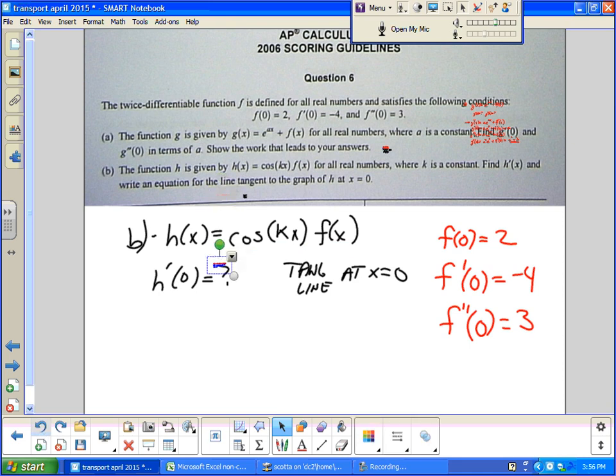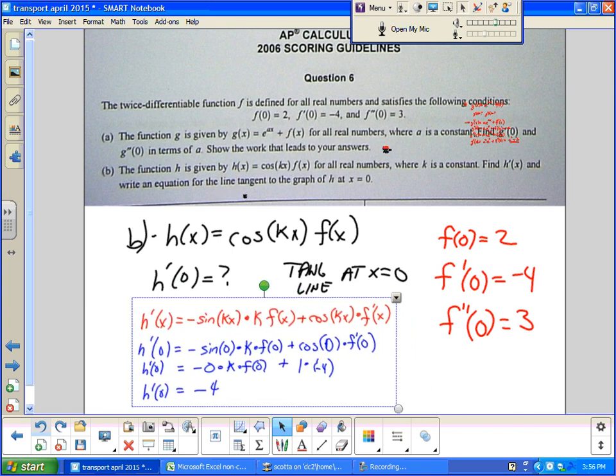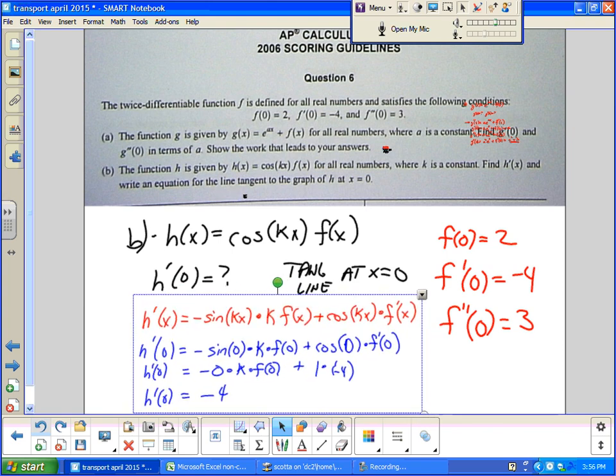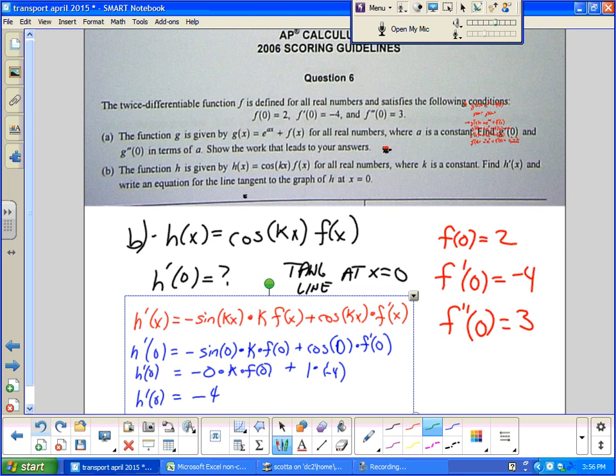So I did the derivative prior to starting the video. Alright. Because this is not that hard a problem. We should hope for one this easy on the AP. The derivative of cosine kx is negative sine times k. Alright. Times f of x. And the derivative of f of x is f prime of x.